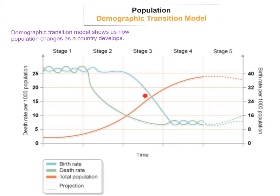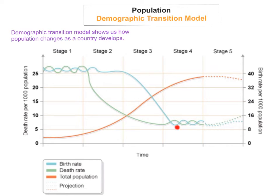What happens now is the population still increases but it's starting to slow down. When you get to stage 4, the population cycle changes. The birth rate will continue to decrease, and in stage 4 the birth rate and death rate will fluctuate. So at certain stages and times of stage 4, you'll have an increase in population and also a decrease in population.